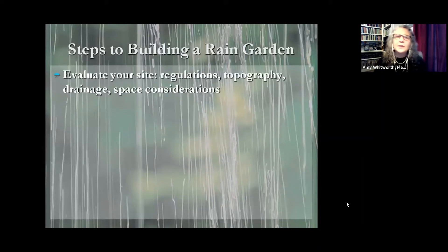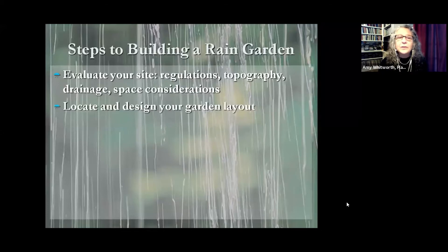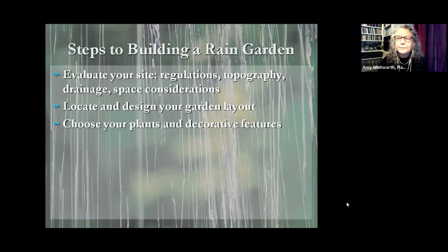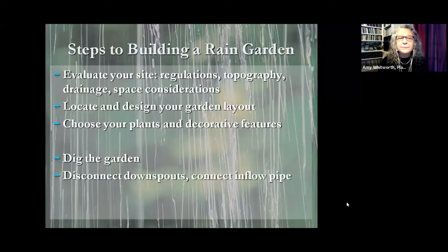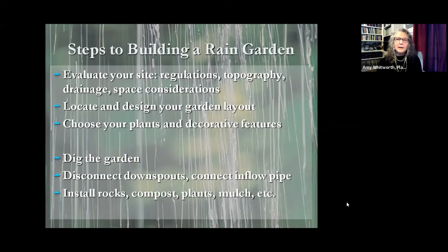The steps to building a rain garden: first, evaluate your site — look at whether you're allowed to build one, whether you have steep slopes or relatively flat terrain, what's the drainage, how much room you have. With those things in mind, determine where it should be located and how big it needs to be. Lay out the shape, choose your plants and decorative features like rocks or wood, dig and excavate the sunken depression, then connect the downspout to the rain garden inflow, install plants and accessories, and you're ready to go.